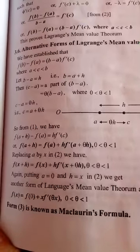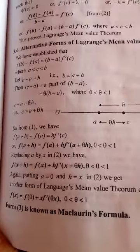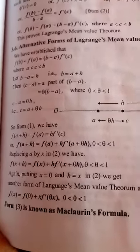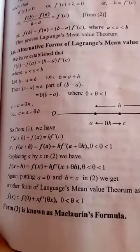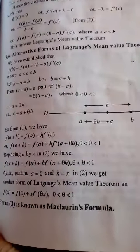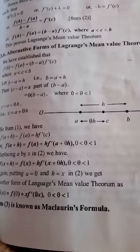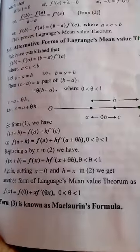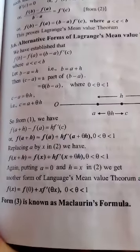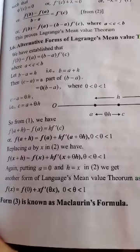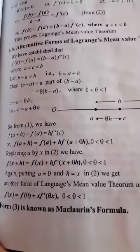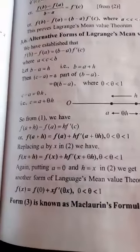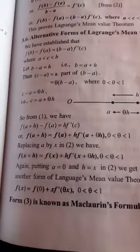For example, replacing b by x and a by 0 in the interval: f(x) is equal to f(0) plus x times f'(θx), where 0 < θ < 1. Today we have learned Lagrange's Mean Value Theorem, its proof, and its alternative forms, which are useful in many problems. The material has already been uploaded for you to refer to.